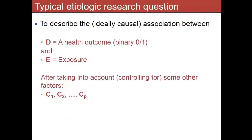In a typical epi research question — a causal, etiologic research setting — we want to understand how three types of variables relate to each other. There's a health outcome — and really in this course for a while we're going to be thinking about a binary health outcome, a zero-one outcome: alive or dead, cancer or no cancer. Then we're going to think about exposures, which are really the primary variable of interest.